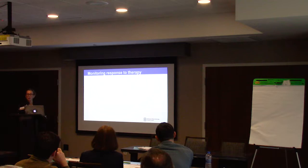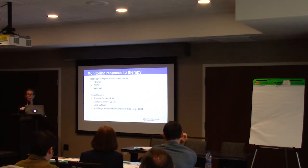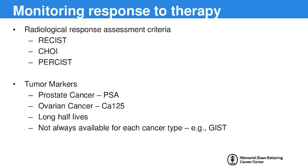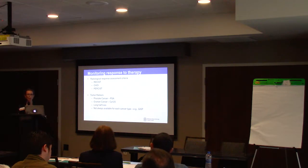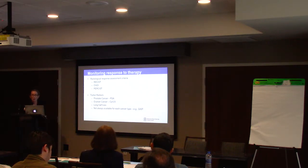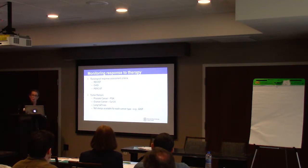Looking at monitoring and response to therapy utilizing ctDNA: currently we use radiological methods in clinical trials including RECIST, CHOI, and PERSIST, but none are perfect. In other tumors we use tumor markers like PSA for prostate cancer or CA125 for ovarian cancer; however, many cancer types like GIST don't have specific serum biomarkers.